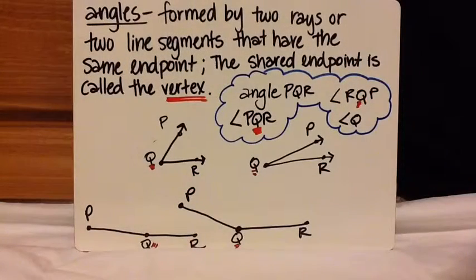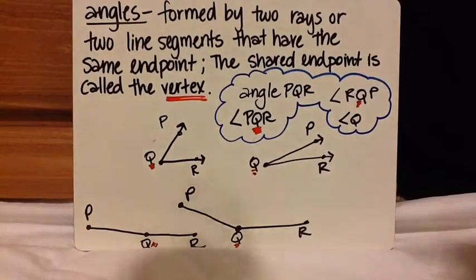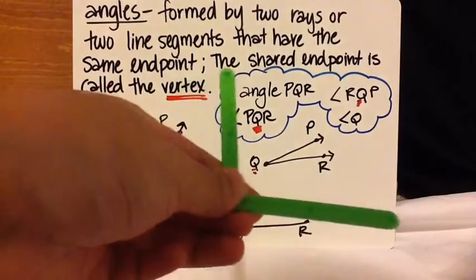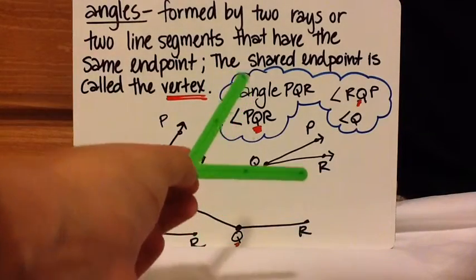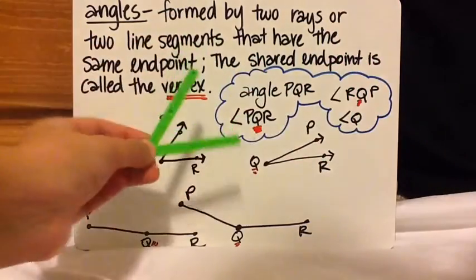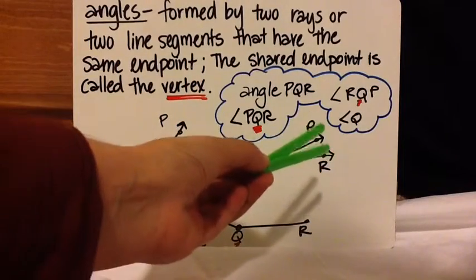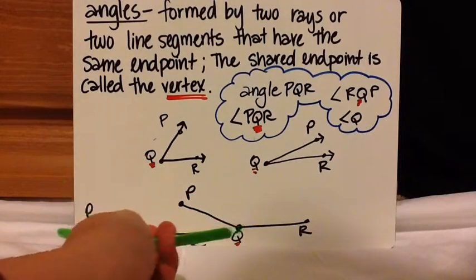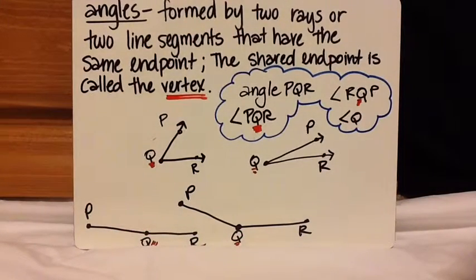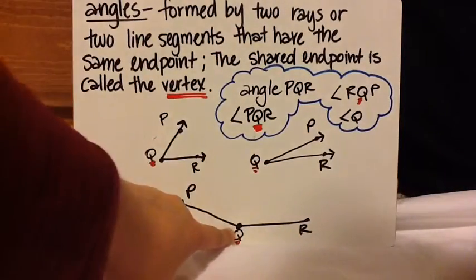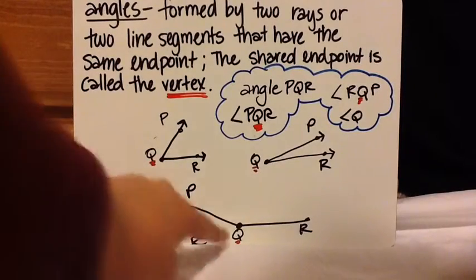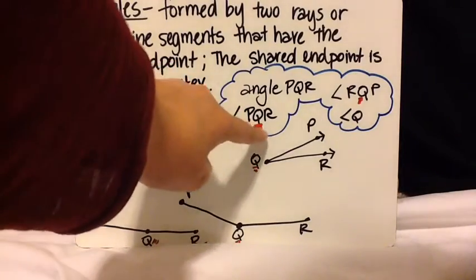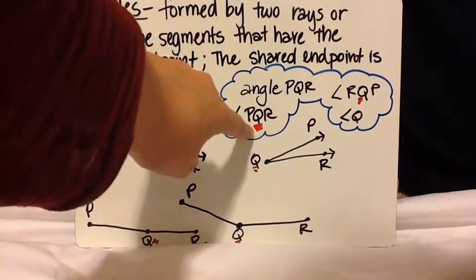So let's look at some angles and how you would write them. It is two rays connected or two line segments that share the same end point. If these are my two rays or line segments and they have the same end point, the end point is called a vertex. Notice the Q is where the vertex is. This is very important — that's why I underlined it in red. When you write it, you draw an angle and write PQR. Your vertex letter must be in the middle, because that tells people where the end point of your angle is.